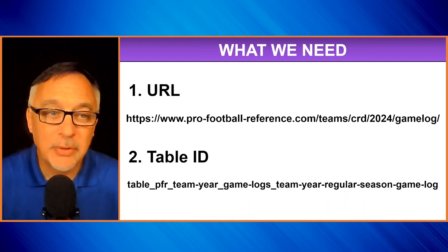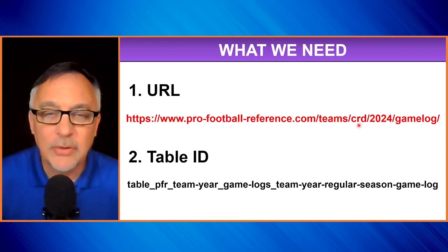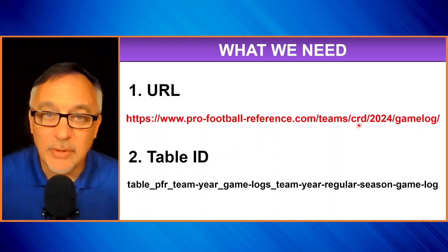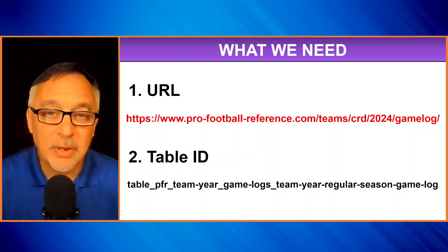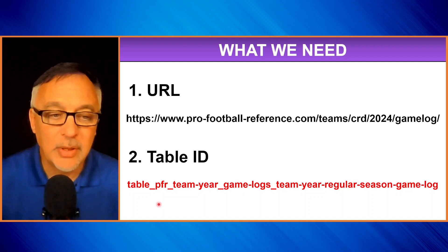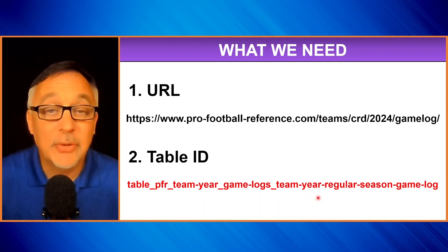What do we need to know in order to scrape the data? The first thing we need to know is a URL. I'm using profootballreference.com — here is an example of a URL. I'm using the Cardinals because Arizona is the first state or city alphabetically among all 32 NFL teams. Once we get to that webpage, we're going to look at a table that we want to scrape the data from, and that table has an ID. The table ID is a much longer string now — table underscore PFR underscore team year and so on. That's what we need to know to make this code work.